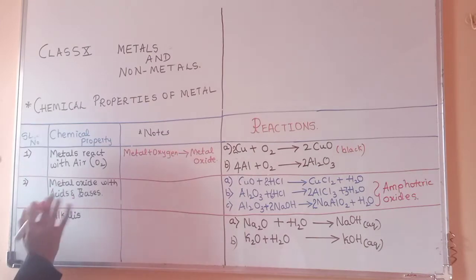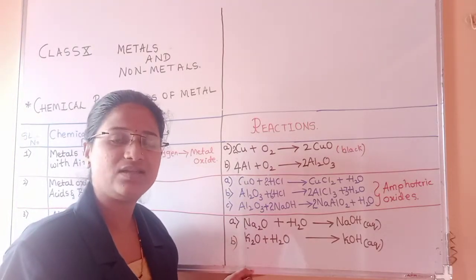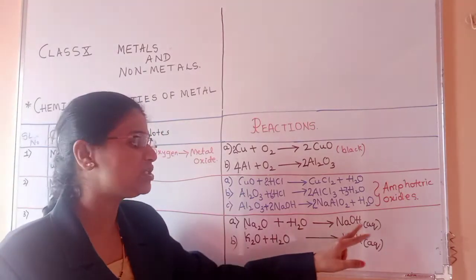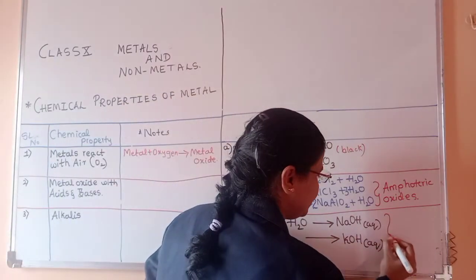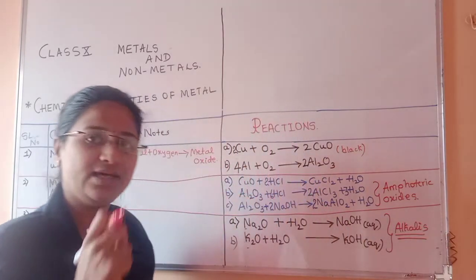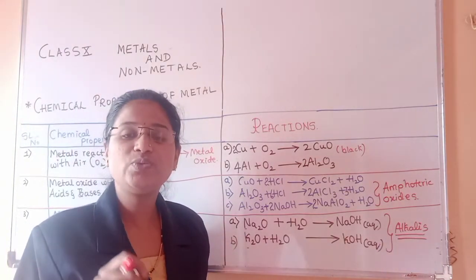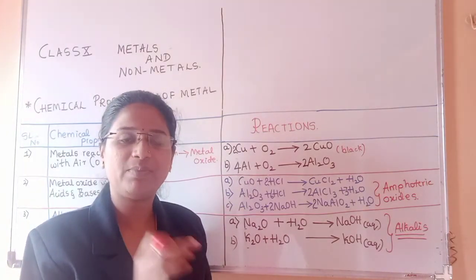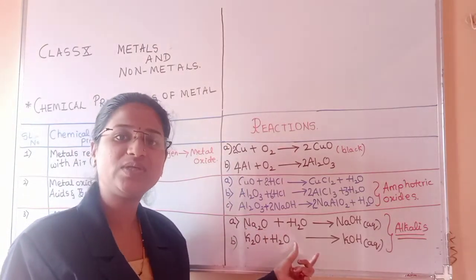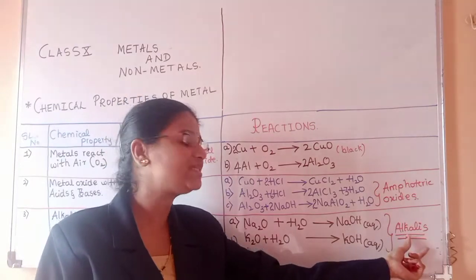Some oxides of metals like sodium and potassium, when they react with water, form a solution called an alkali. This gives sodium hydroxide and potassium hydroxide, which are called alkalies. Usually metallic oxides are insoluble in water, but some metallic oxides like sodium oxide and potassium oxide react with water — they are soluble — and when dissolved, they form a solution called an alkali.